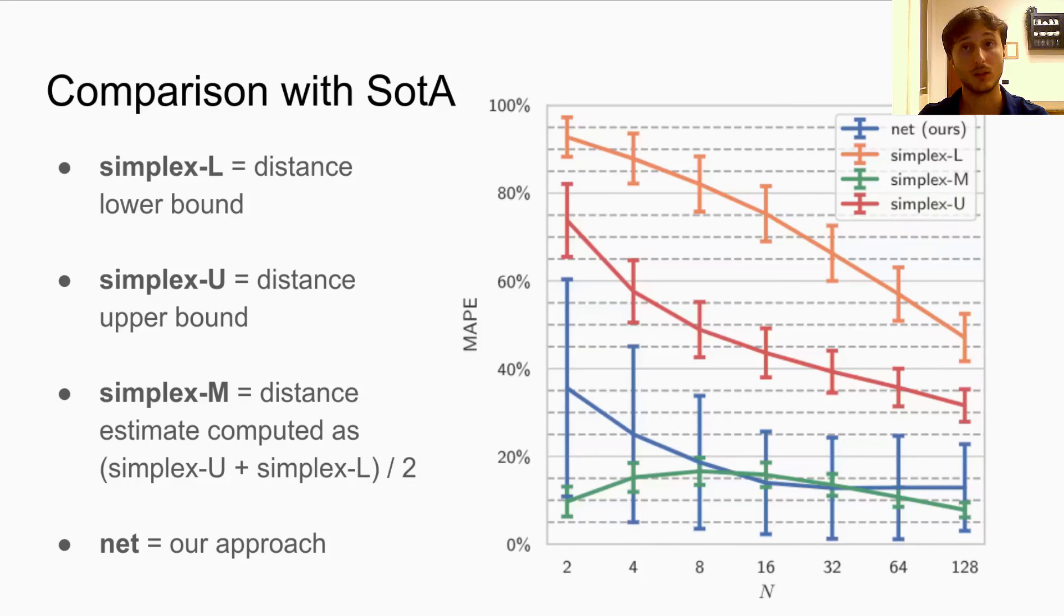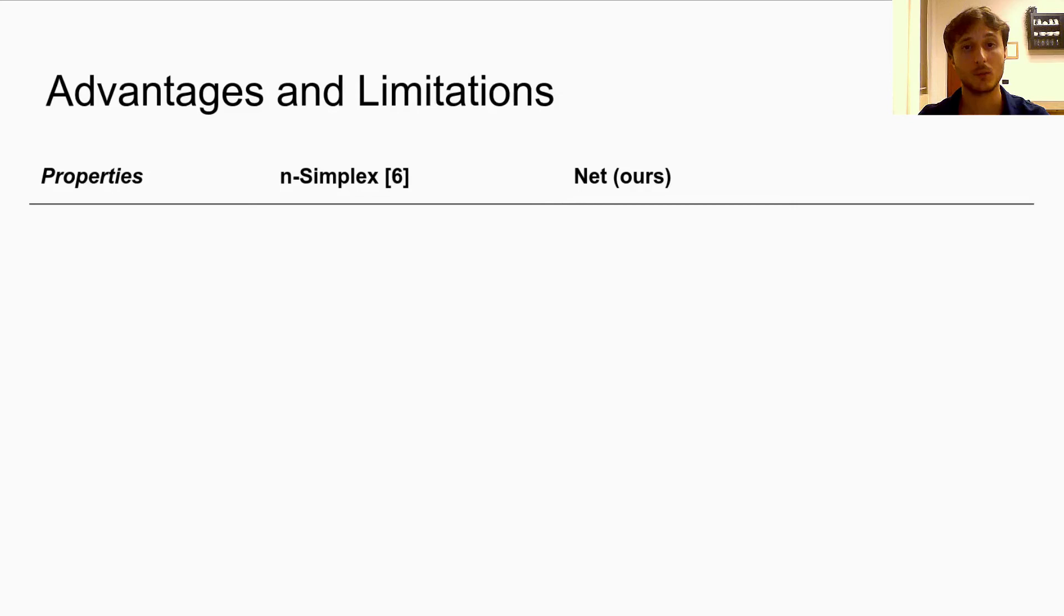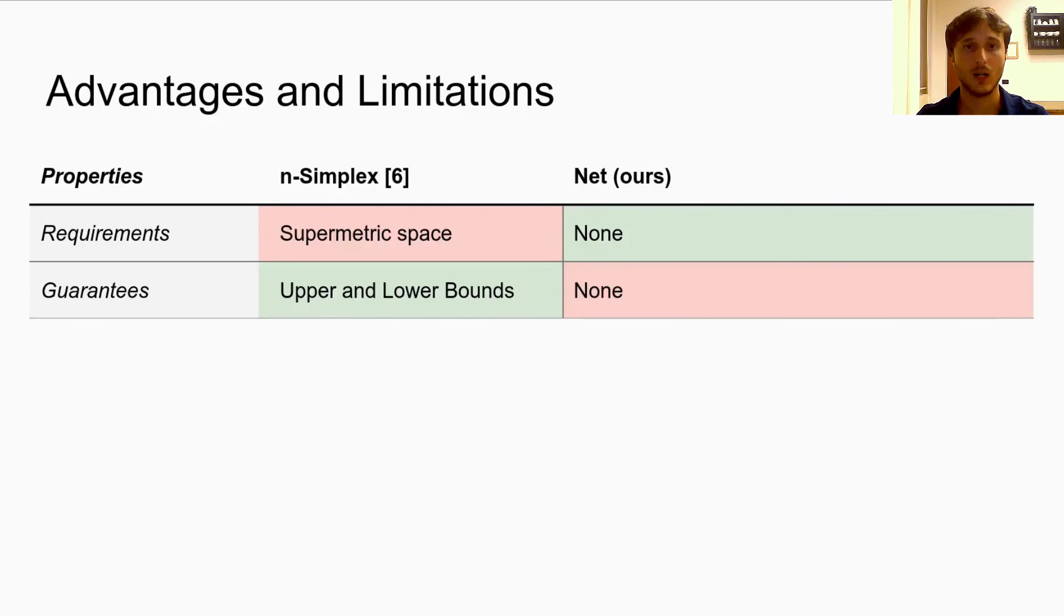Overall, the method we presented and explored here is a mixed bag of pros and cons when compared to the n-simplex. Our method is general and can be applied to generic metric spaces, while the n-simplex requires a space to be supermetric and thus satisfying a specific property called the four-point property.